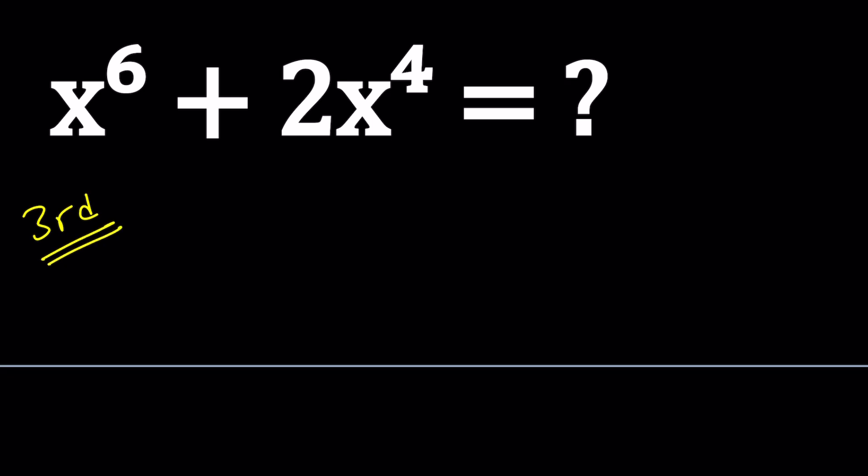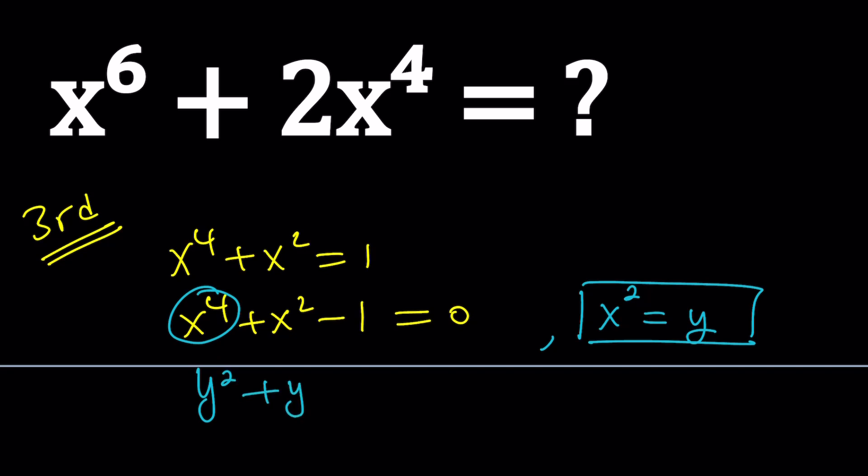So for our third method, we're going to go ahead and take the first expression and then set it equal to zero. So by putting everything on the left hand side, so we can get a full polynomial. And then to solve this polynomial, we're going to use substitution. So I'm going to replace x squared with y. And if I plug in, this becomes x squared squared or just y squared. And this just turns into a quadratic equation.